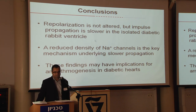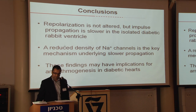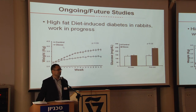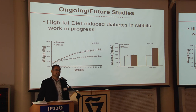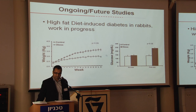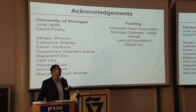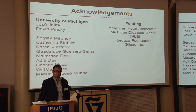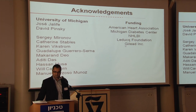In summary, repolarization is not altered in this diabetic rabbit model, but impulse propagation is definitely slower, and a reduced density of the sodium current seems to be the key underlying ionic mechanism. These findings may have implications for arrhythmogenesis, which we have not yet explored in detail. We are now working on a high fat diet-induced diabetes model — we've just finished these studies and rabbits gained weight over about 17 to 18 weeks and are also hyperglycemic. I'd like to thank my mentor Dr. Khalife, David Pinsky for support with the high fat diet experiments, a number of colleagues who did the experimental work, and all the funding agencies. Thank you for your attention.